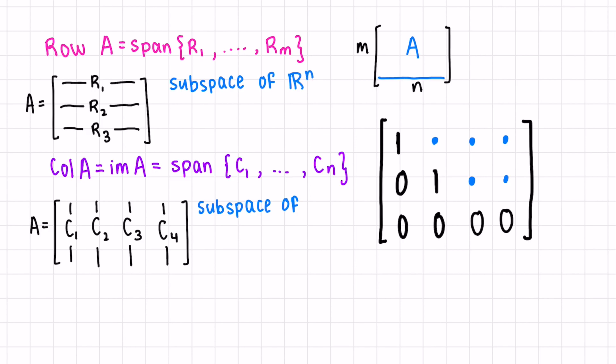And the column space is the span of each of the columns in our matrix A. So if we're saying our matrix is M by N, there'll be N columns. And this is a subspace of, well, how long is each of these columns? It has M components, so it's a subspace of R^M.